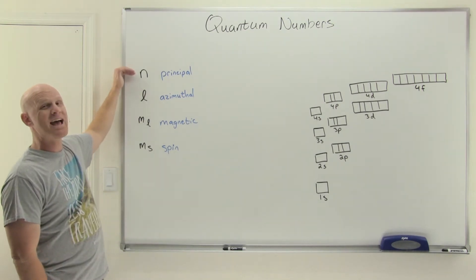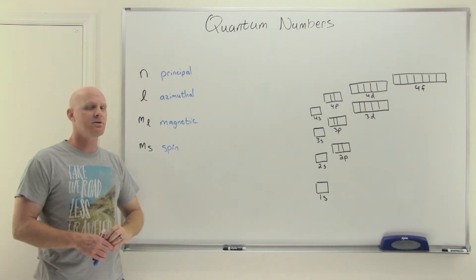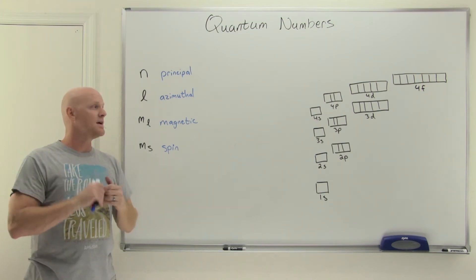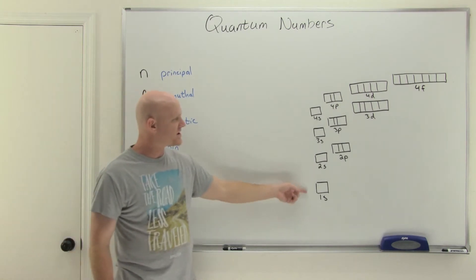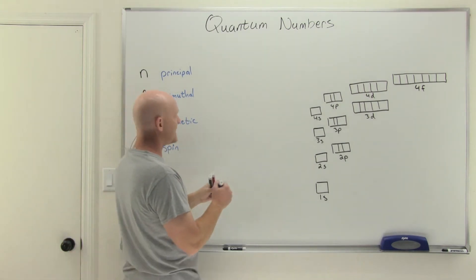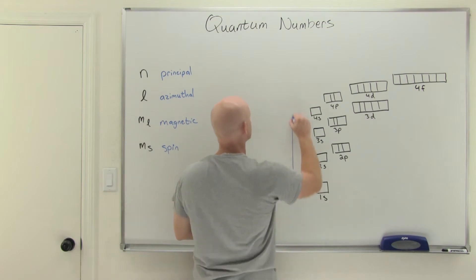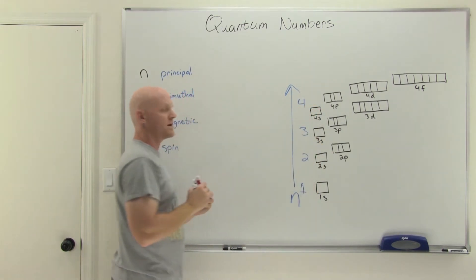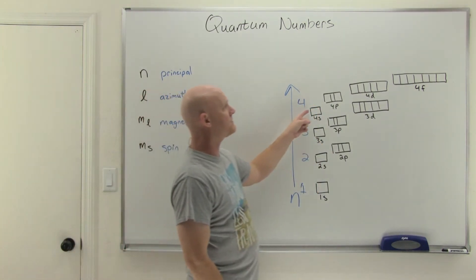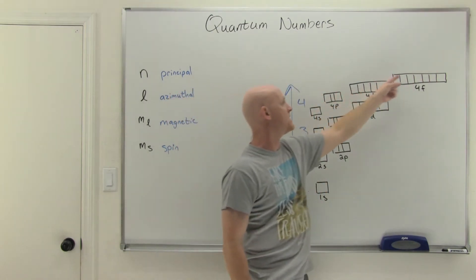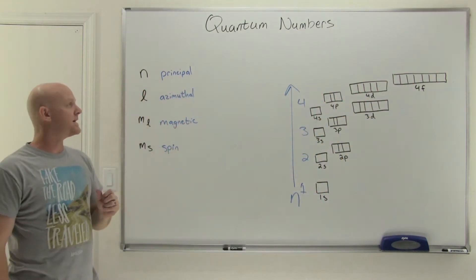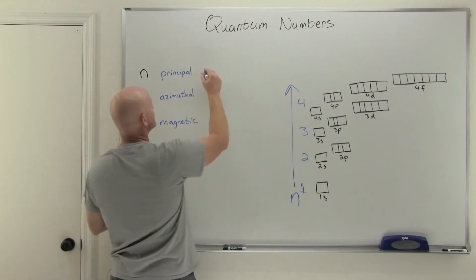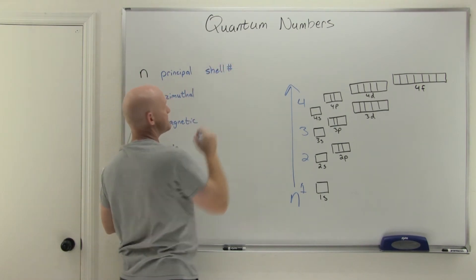The principal quantum number is n — the same n we saw at the very first lesson, like n equals 1, 2, 3, which Bohr thought corresponded to circular orbits. In our case it actually corresponds to the shell: first shell, second shell, third shell, fourth shell, and so forth. So if an electron is anywhere in the fourth shell — whether in the S, P, D, or F subshell — its n value would be 4. That's what the principal quantum number tells you: effectively the shell number for that electron.